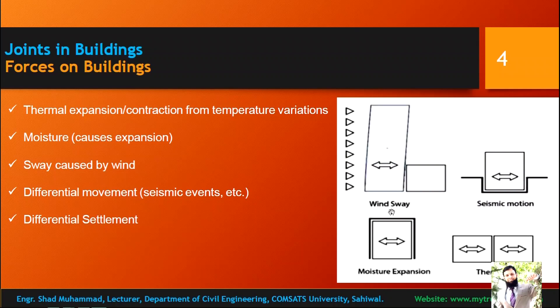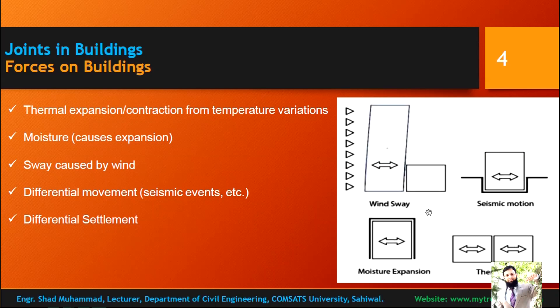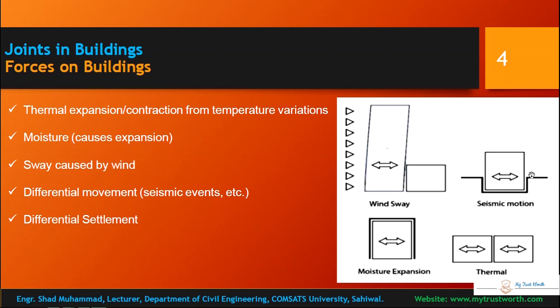Wind-caused sway can lead to collision between two different structures. Earthquake vibrations cause two different structures to have different natural periods, so they vibrate with different frequencies — creating a chance of collision. Differential settlements are also a concern: total settlement is not dangerous because the whole structure settles down, but partial settlement — where one part settles and another stays in place — is a concern requiring a joint in the building.